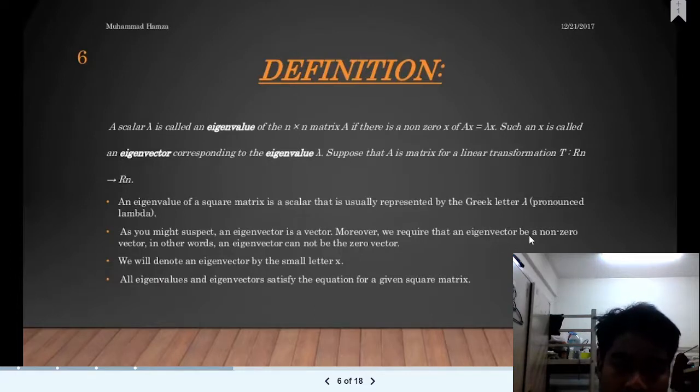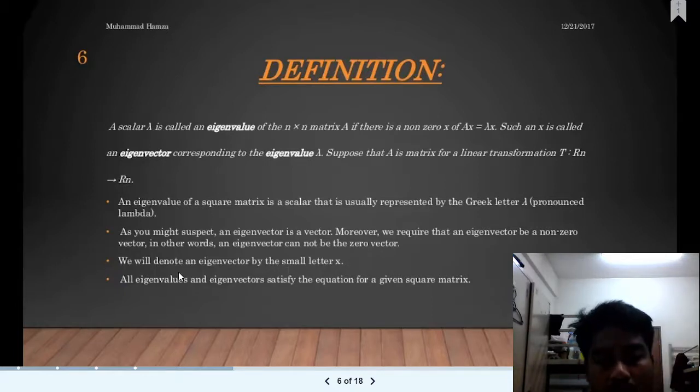As you might suspect, an eigenvector is a vector. Moreover, we will call that eigenvector a non-zero vector. In other words, an eigenvector cannot be the zero vector. We will denote an eigenvector by the small letter X. All eigenvalues and eigenvectors satisfy the equation for a given square matrix.